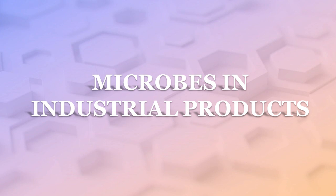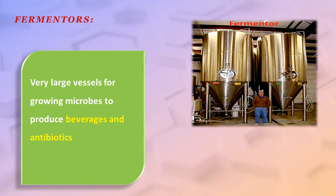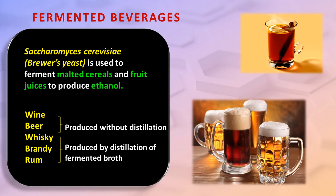In many industries, microbes are used to produce beverages and antibiotics in very large vessels called fermenters. Saccharomyces cerevisiae, brewer's yeast, is used to ferment malted cereals and fruit juices to produce ethanol. Wine and beer are produced without distillation, while whiskey, brandy, and rum are produced by distillation of fermented broth.